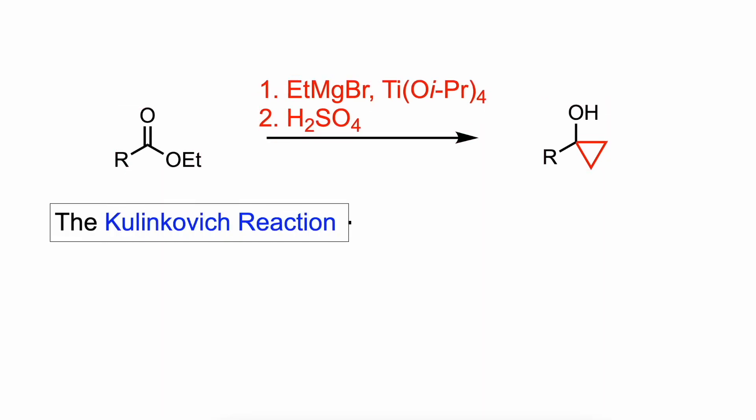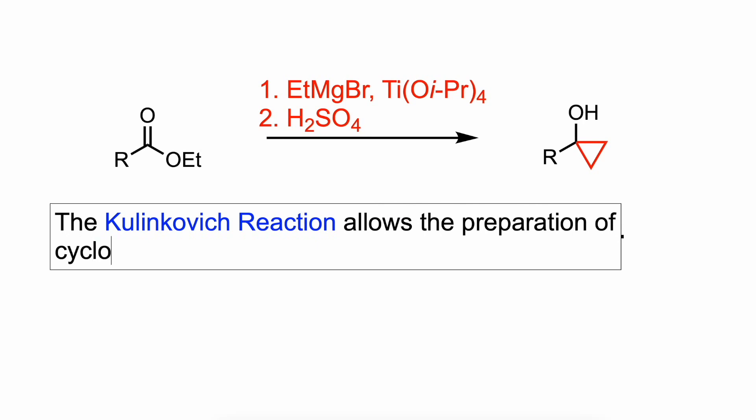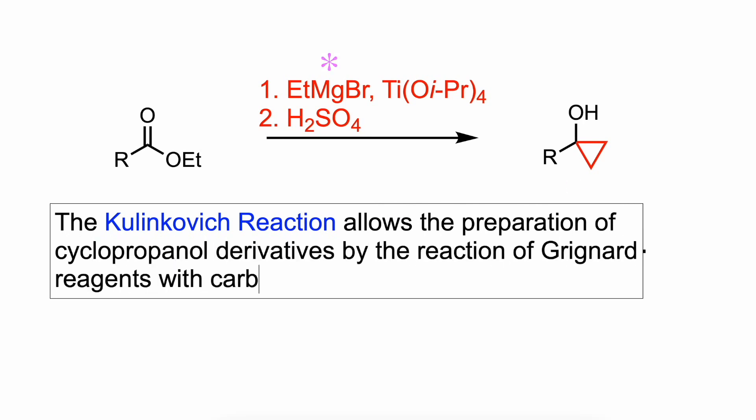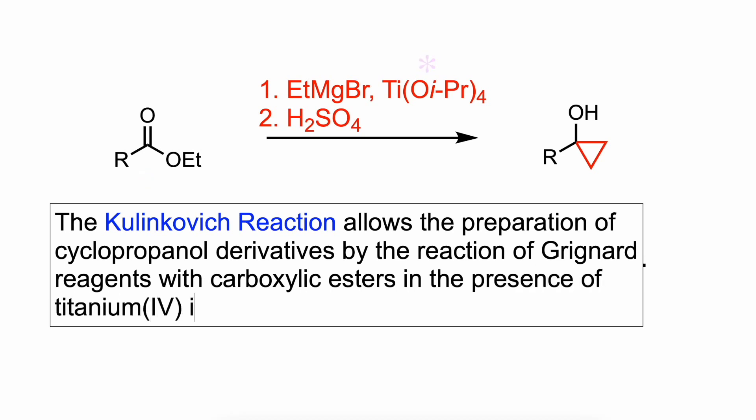The Kulinkovich reaction allows the preparation of cyclopropanol derivatives by the reaction of Grignard reagents with carboxylic esters in the presence of titanium tetraisopropoxide.